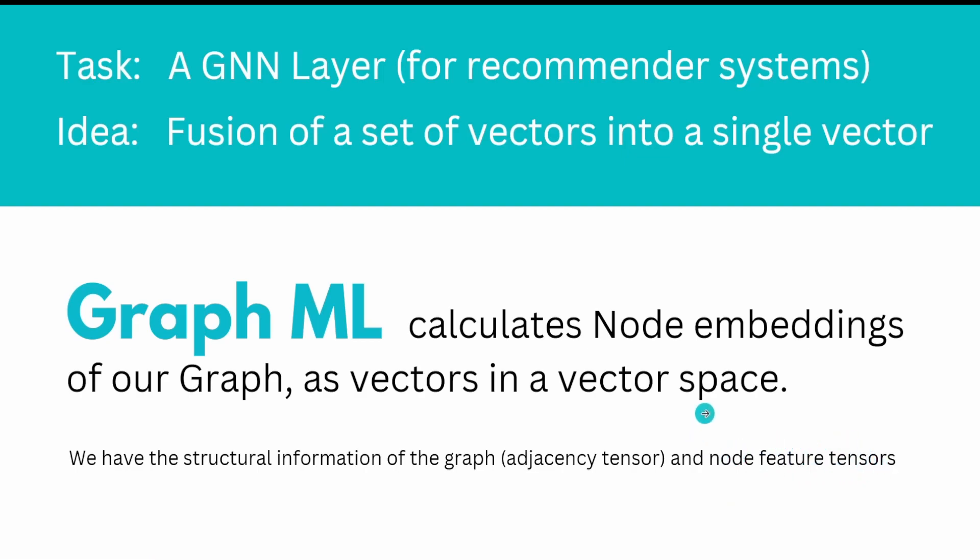For example, if you have a node that represents a book, the feature tensor can encode the semantic content of the book. I showed you in my last video how to take a document and create a feature tensor - it was with transformers.